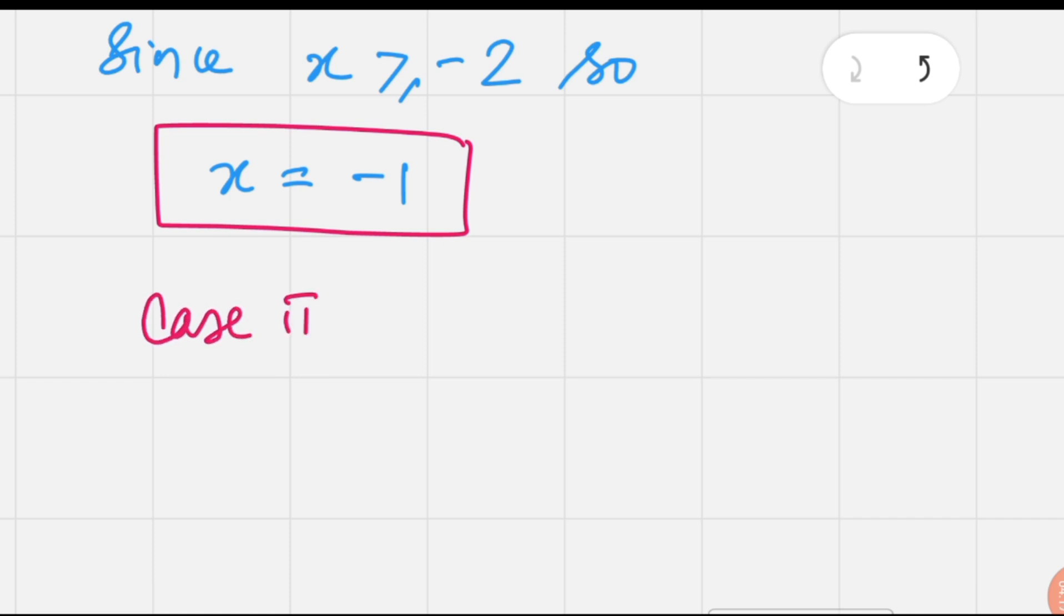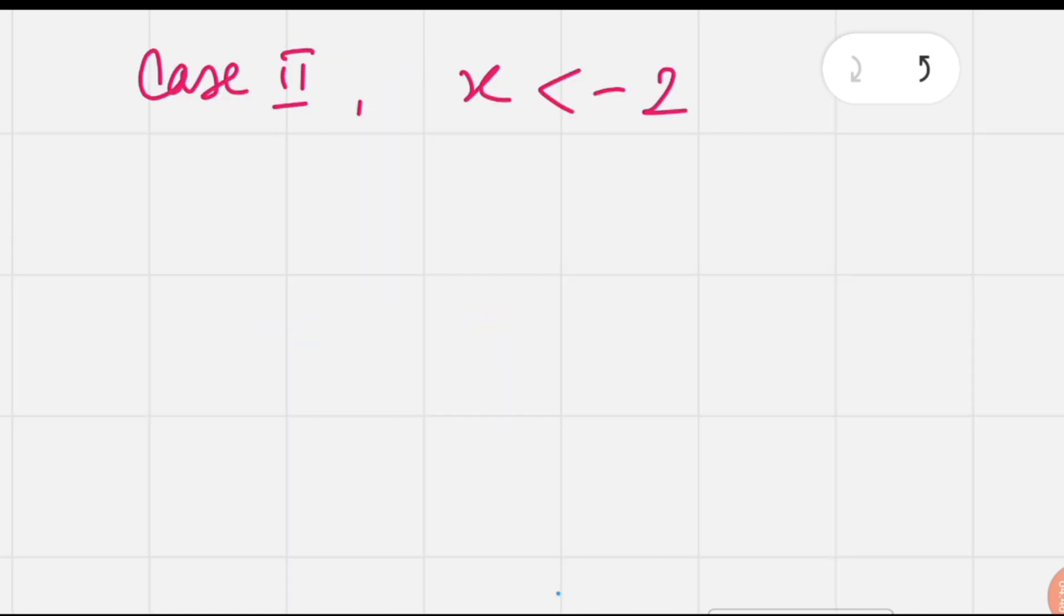For the other case, when x is less than -2, the definition of the modulus function gives -(x + 2).